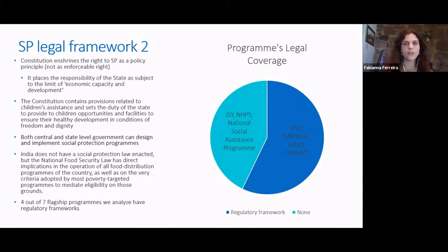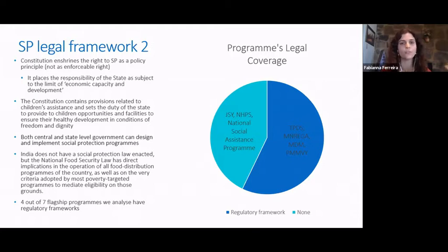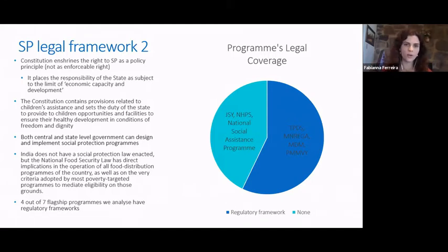Regarding statutory legislation that directly or indirectly refers to social protection, there are three main laws disciplining the sector: the Mahatma Gandhi National Rural Employment Guarantee Act, the National Food Security Act, and the direct benefit transfer mechanism. In particular, the National Food Security Act has implications for the operation of all food distribution programs and the criteria adopted by most poverty-targeted programs to mediate eligibility. It is the regulatory framework of three out of four programs with legal coverage in the sample.